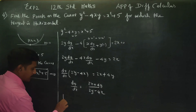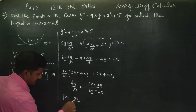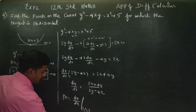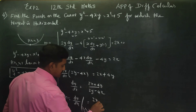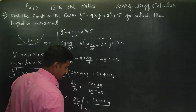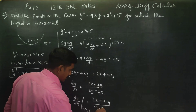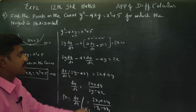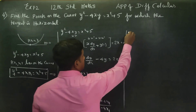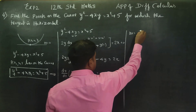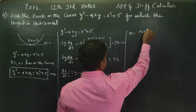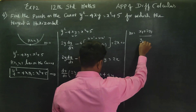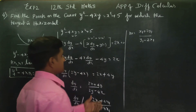Now, the slope m equals dy/dx at the point (x1, y1). Substituting: m equals (2x1 plus 4y1) divided by (2y1 minus 4x1). Cancelling the common factor of 2, the slope simplifies to (x1 plus 2y1) divided by (y1 minus 2x1).